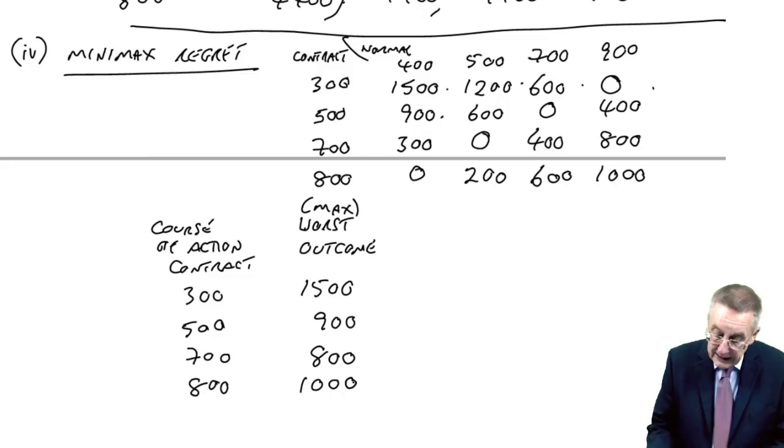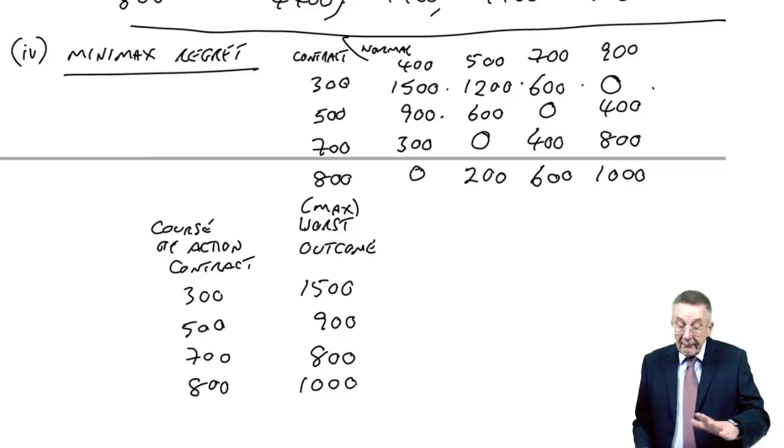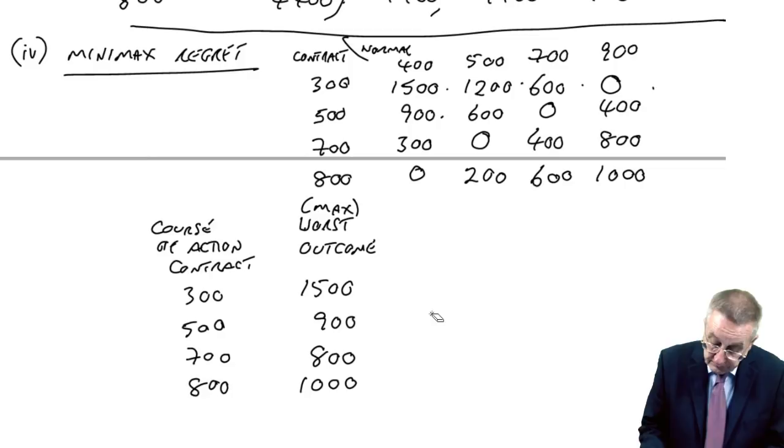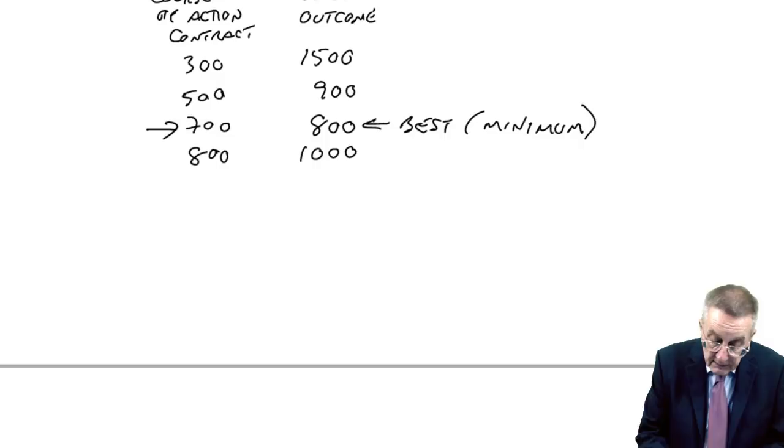And now, we choose whichever of those worst outcomes is the best. And again, because the regrets are losses, the best is the smallest. The best, or the minimum of the maximum. Minimax, the minimum of the maximum. And so, that's the one we'll go for, and therefore, we'll sign a contract for 700.